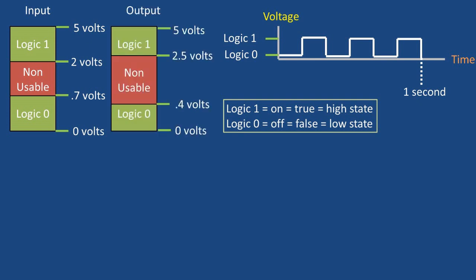On the other hand, this logic device will output anywhere between five volts to 2.5 volts for a logic one and 0.4 volts to zero volts for a logic zero. Notice that the output has a narrower range to ensure that at the input, the logic level is not misread. These logic ones and zeroes are what people are talking about when they say that computers operate off of zeros and ones.